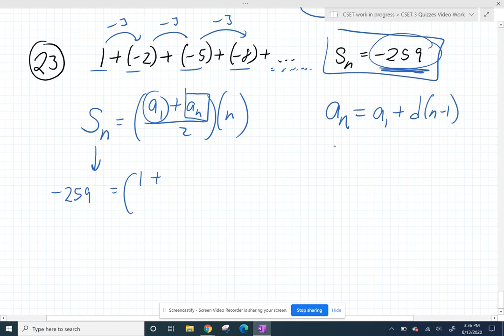So I can figure out what that last term is by taking my first term, which is just a1, and adding my common difference, which is that negative 3, n minus one times. I'm going to clean that up. So that's negative 3n plus 4. And I'm going to substitute that in for this a sub n here. That's negative 3n plus 4.